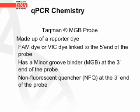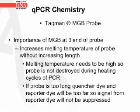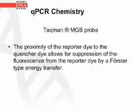The TaqMan MGB probe is made up of a reporter dye — either FAM or VIC — linked to the 5' end of the probe. At the 3' end there is a minor groove binder (MGB) and a non-fluorescent quencher (NFQ). The MGB at the 3' end increases the melting temperature of the probe without increasing the length, which is important so the probe is not destroyed during heating cycles. If the probe is too long, the quencher dye and reporter dye will be too far apart, suppression won't occur, and suppression is a critical part of the qPCR process. The proximity of the reporter dye to the quencher dye allows for suppression of fluorescence via Förster-type energy transfer.